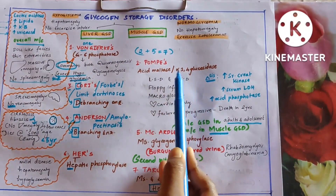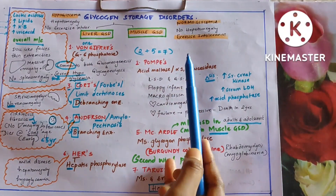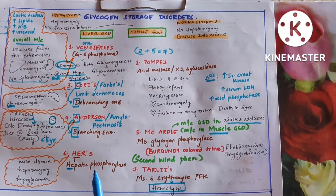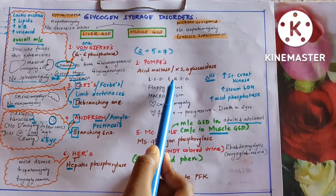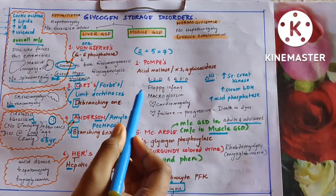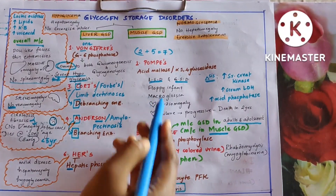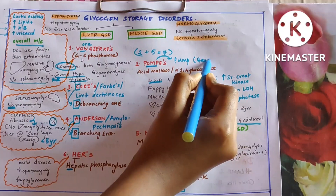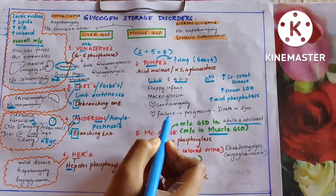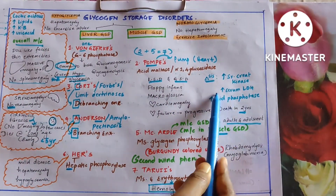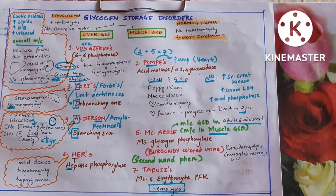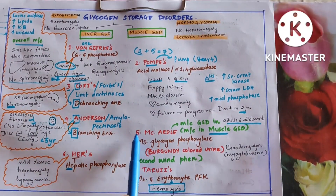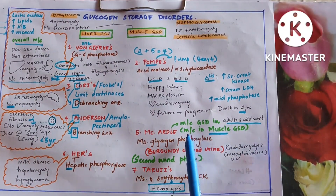Now let us learn about muscle GSD. Pompe's: acid maltase and alpha-1,4-glucosidase deficiency — it is under both lysosomal storage and glycogen storage disorders. Clincher points: floppy infant, macroglossia, and cardiomegaly. The heart pumps blood — so cardiomegaly is Pompe's disease. Cardiac failure and progressive cardiac damage leads to death within two years. Diagnosis is by increased serum creatine kinase, increased serum LDH, and increased acid phosphatase.